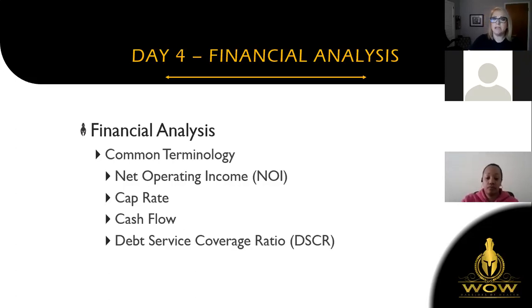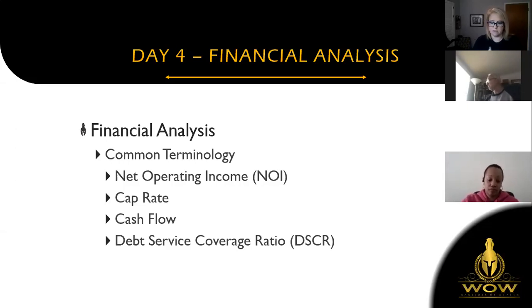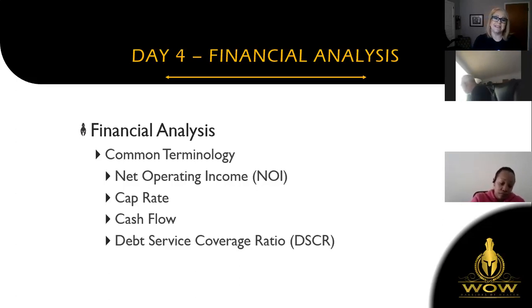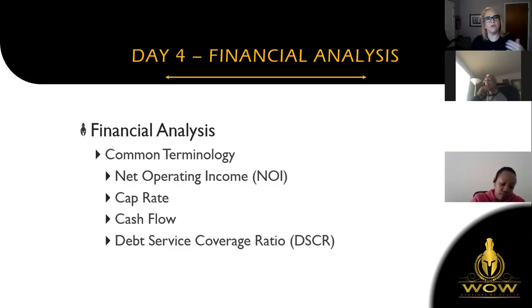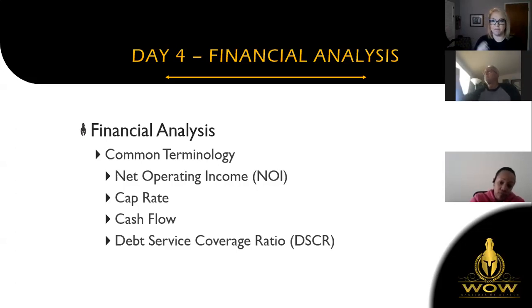I want to start with teaching you some of the common terminology — net operating income. If you're in the two to four family sector, you won't always see things laid out this exact same way, but the calculations are still the same. The terminology is more about five-plus units, but some of these things are going to apply with your lenders even if you're looking at a two, four, or forty unit the same way.